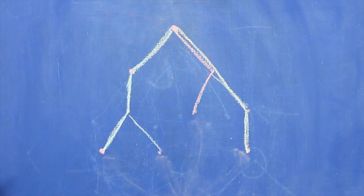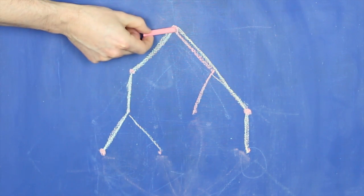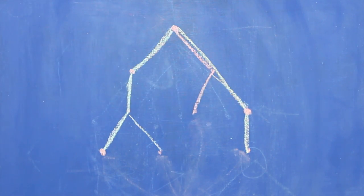then they're on the same branch. But if you have to go up the tree and back down to go from one node to the other, then they're on different branches.